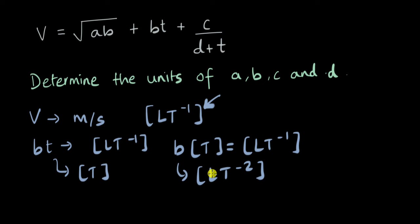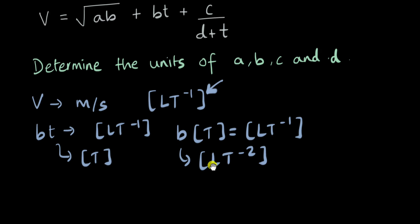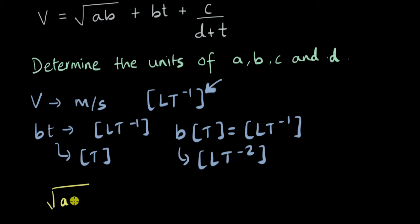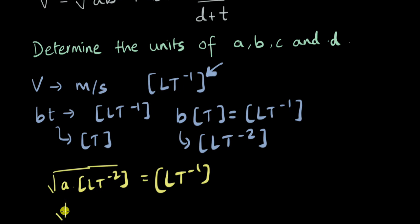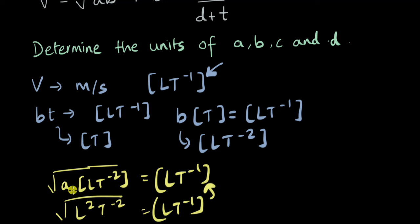Now let's go to √(ab). We know the units of b, and this physical quantity √(ab) must have units of LT⁻¹. If b is LT⁻², then √(a · LT⁻²) = LT⁻¹. If a has dimensions of L, it becomes √(L² · T⁻²), which gives LT⁻¹, matching the velocity. So the dimensions of a come out to be equal to just the dimension of length, L.